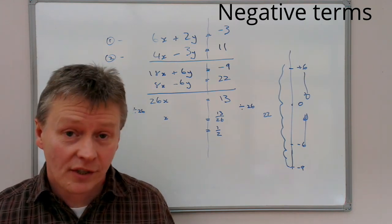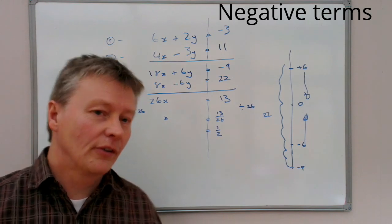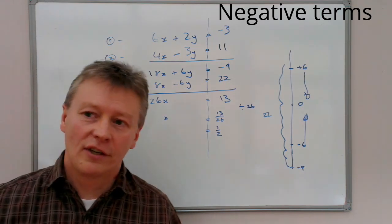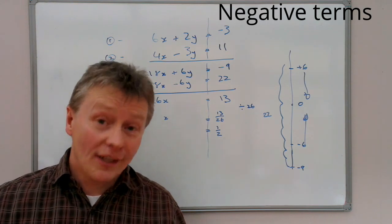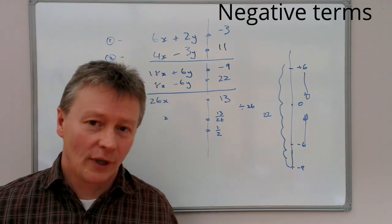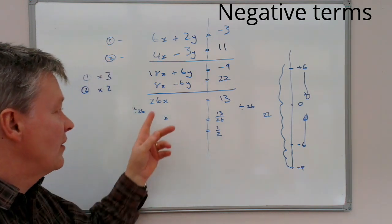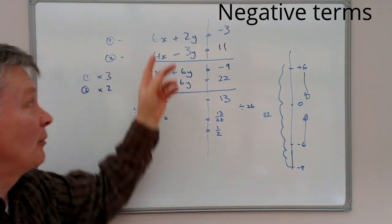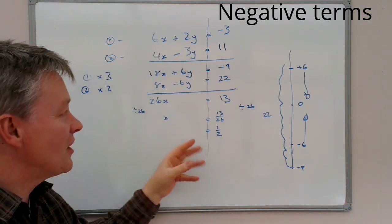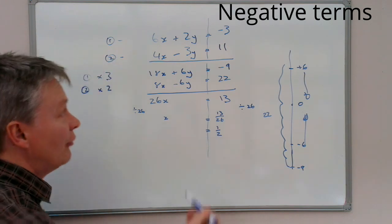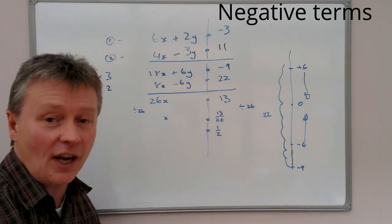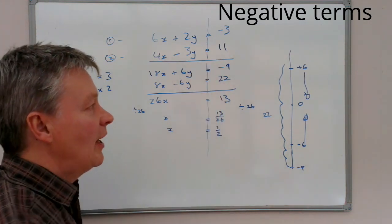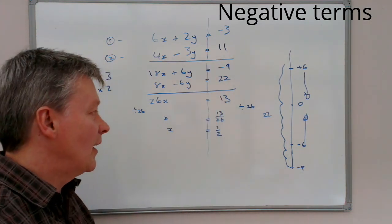With a lot of the GCSE type questions at this level, you know you're on the right lines if you get a relatively straightforward answer. If you start getting answers to 5 or 6 decimal places, the chances are you might not be doing it quite right, so it's well worthwhile checking. The advantage of using this type of system is you can always follow your reasoning through each of the steps.